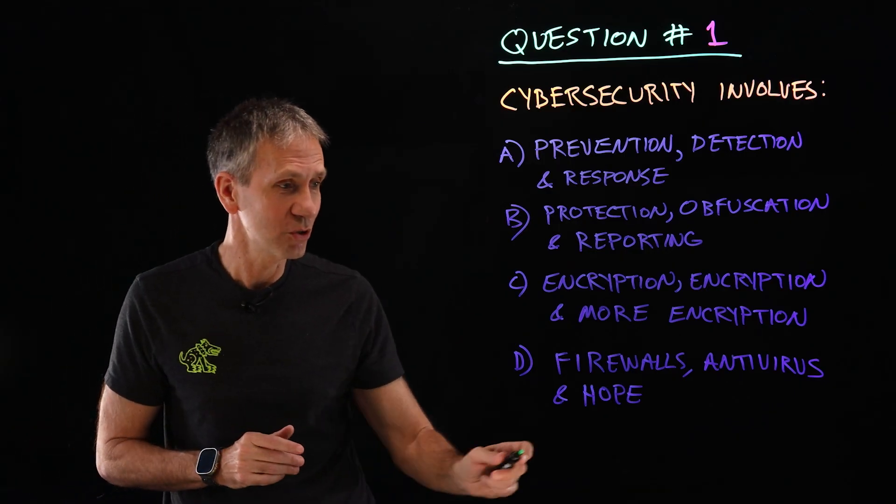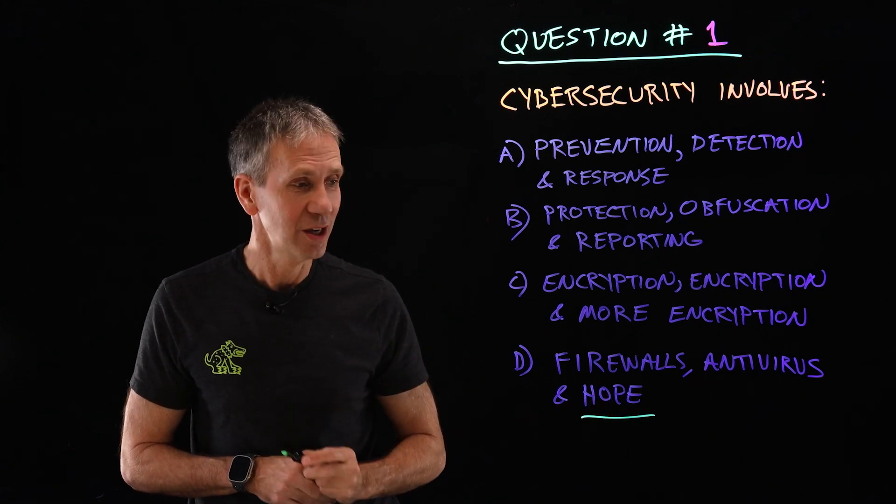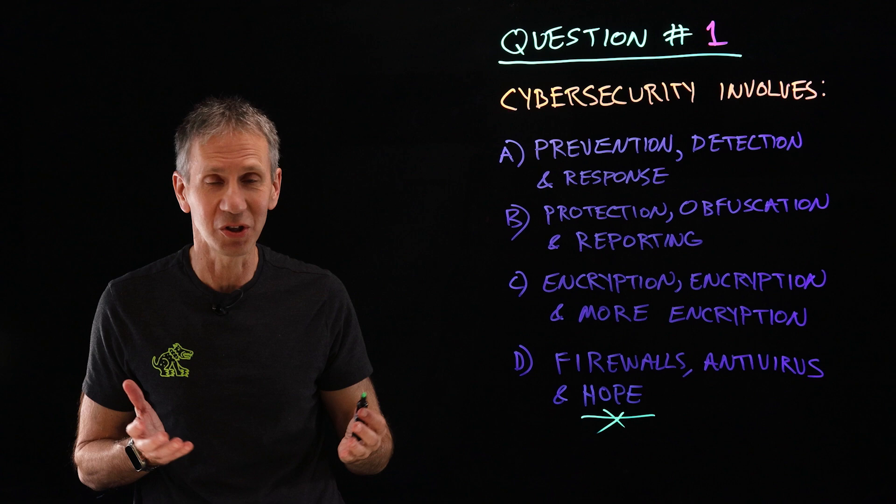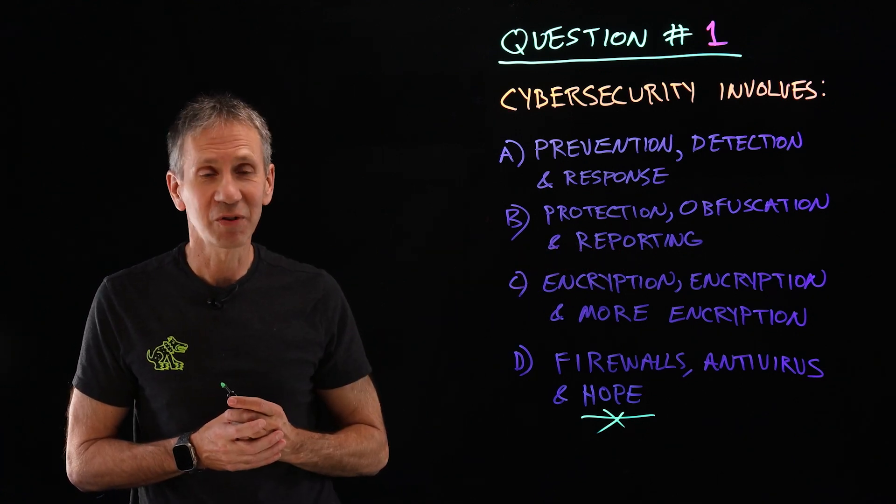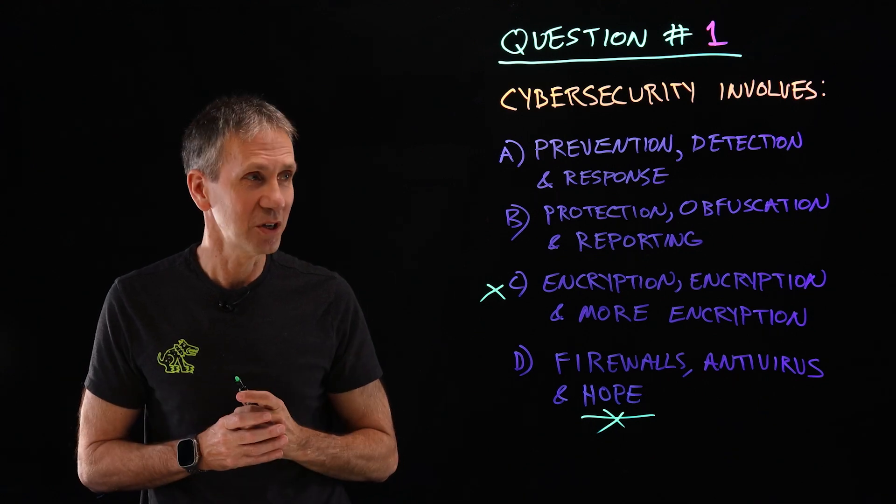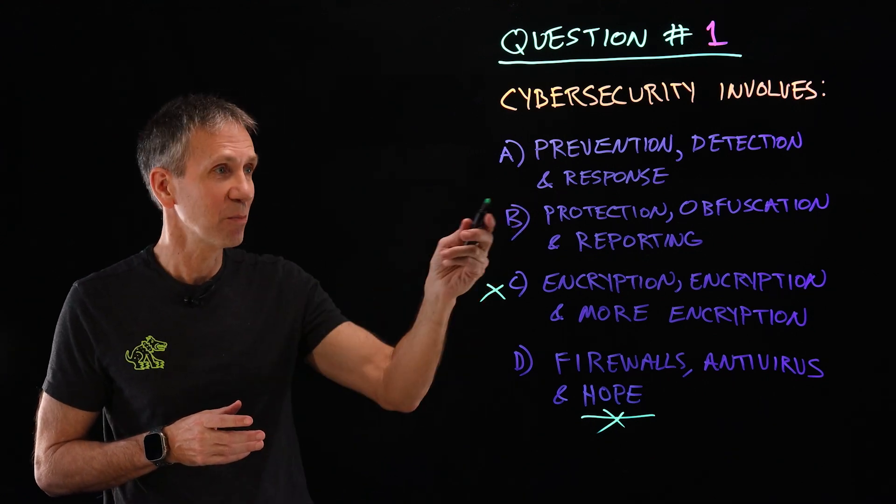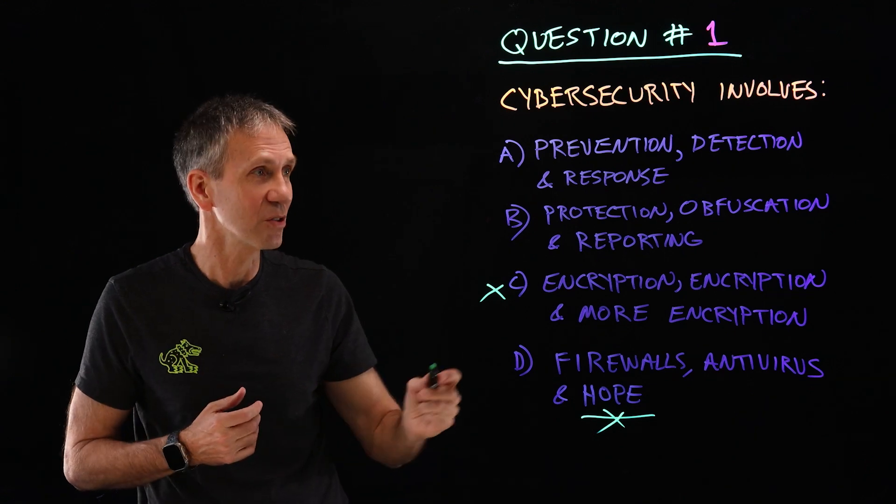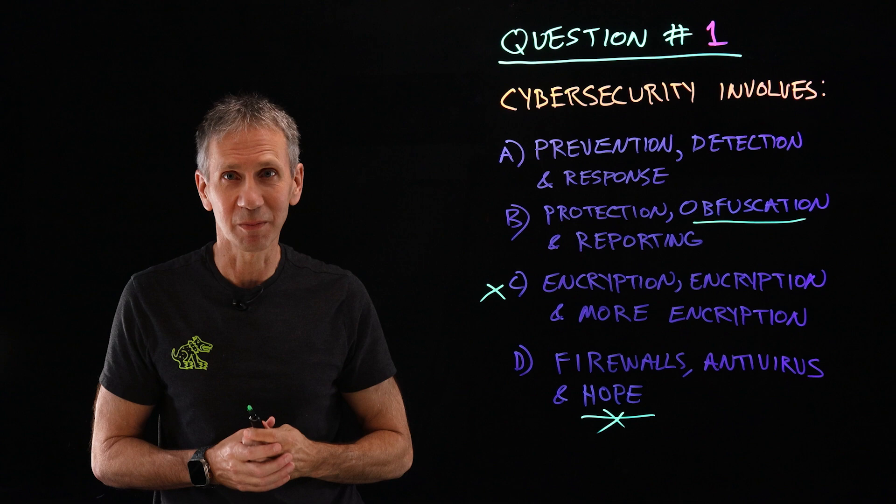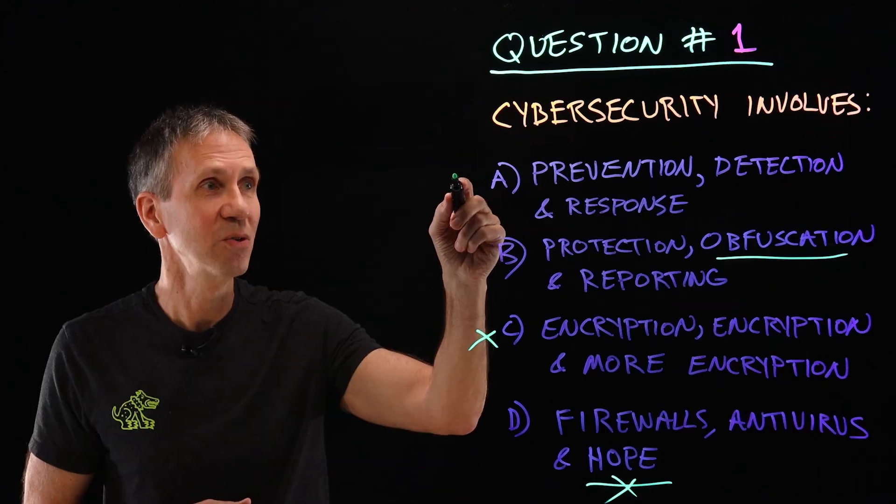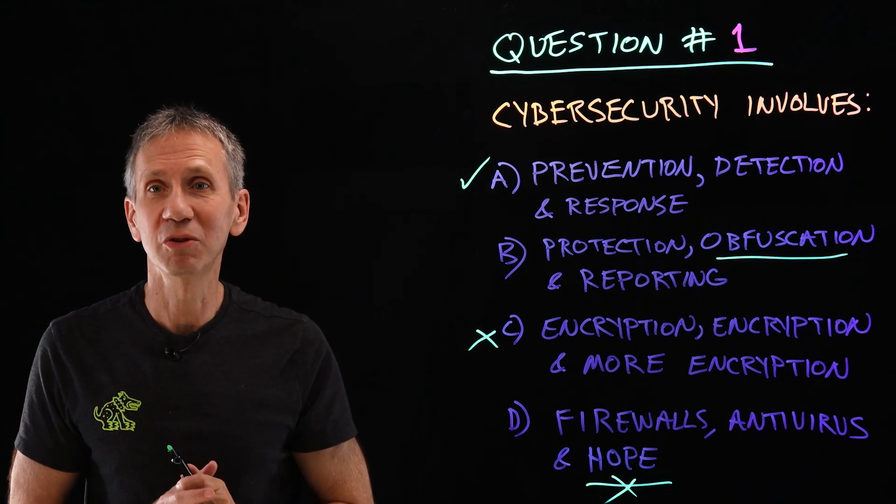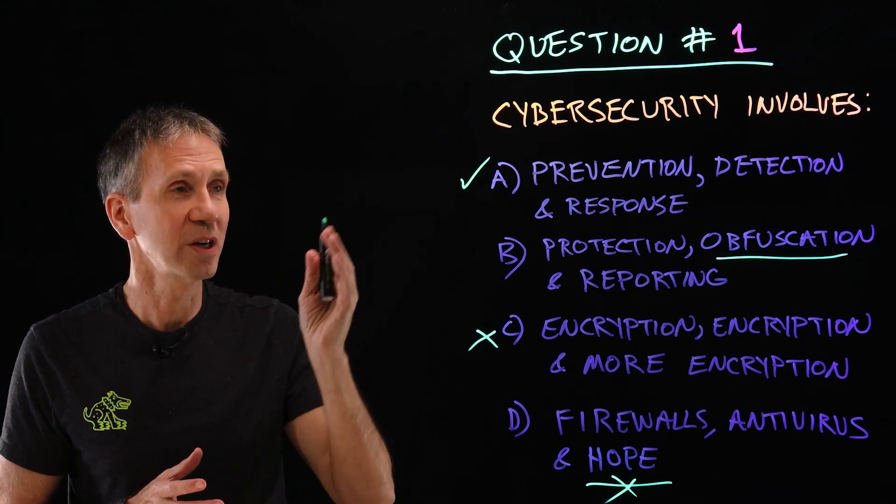Well, I do hope that you understand hope is not a strategy, so that would be a really bad idea, although firewalls and antivirus are certainly important technologies, not nearly enough. Lots and lots of encryption, that's not going to do it either. We need to encrypt, but that's not nearly sufficient. Protection, obfuscation, and reporting - protection and reporting are certainly big parts, but obfuscation, which is basically trying to hide the details of the system, that is not the way to get a system more secure. So if you got A, you got it right. It's prevention, detection, and response. Everything we do in cybersecurity is about doing those three things.